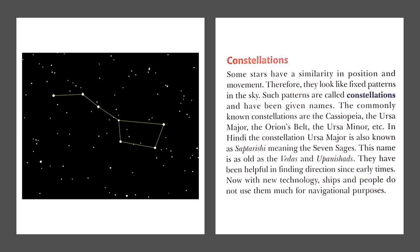Next we have constellations. Some stars have a similarity in position and movement and therefore they look like fixed patterns in the sky. Such patterns are called constellations and have been given names. Constellation means some stars have a fixed or similar pattern of position and movement. They form a pattern when you see in the sky and are called constellations.